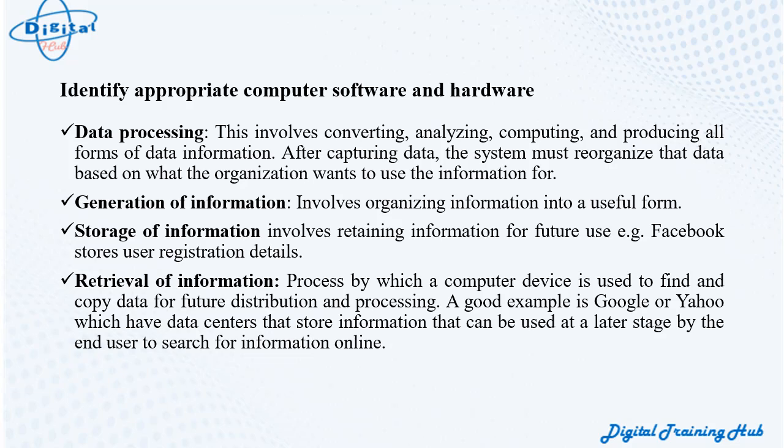Generation of information involves organizing information into a useful form. Storage of information involves retaining information for future use, for example Facebook stores user registration details. Retrieval of information is the process by which a computer device is used to find and copy data for future distribution and processing — for example, Google or Yahoo, which have data centers that store information for end users to search online.